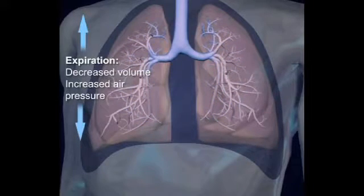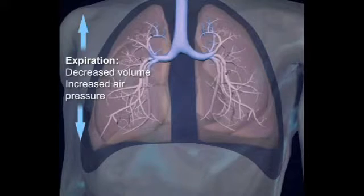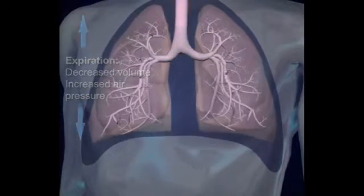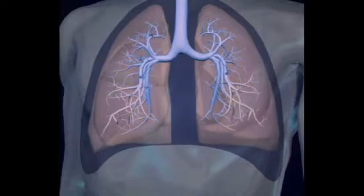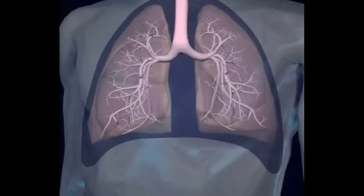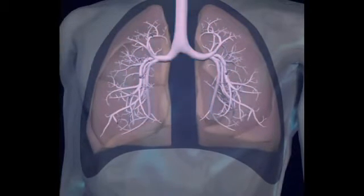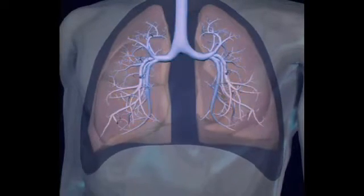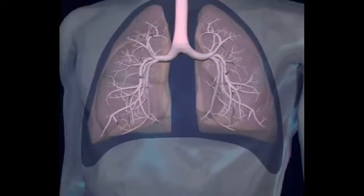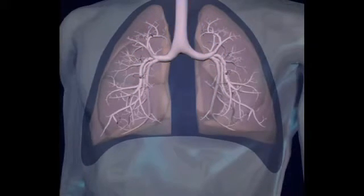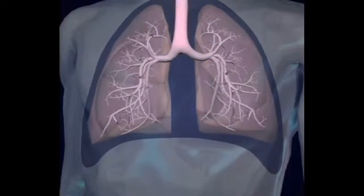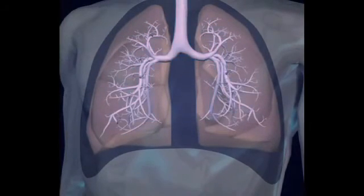Expiration, or exhalation, is normally a passive process involving the relaxation of the diaphragm and the external intercostals. This decreases thoracic and lung volume, increasing pressure in the lungs and forcing air out. Other mechanisms, such as the elastic recoil of lung tissue and surface tension within the alveoli, assist with exhalation.